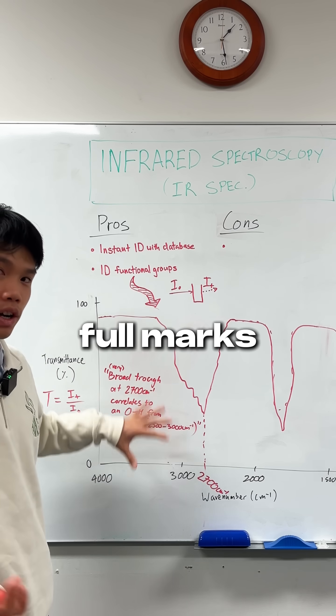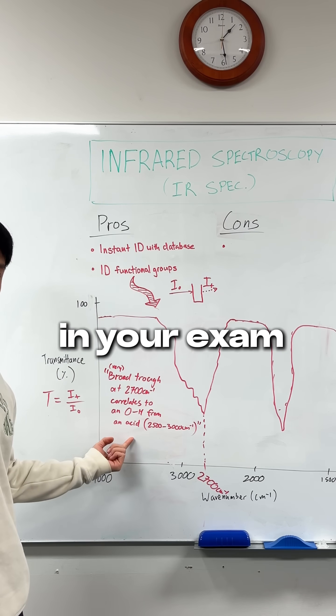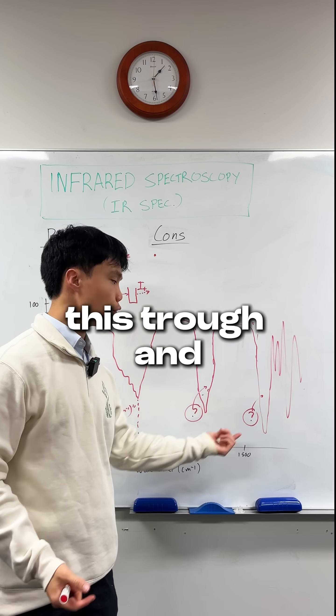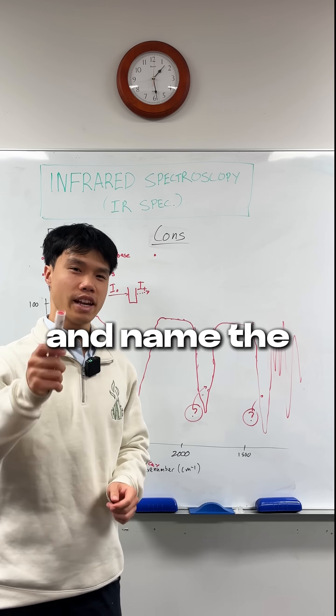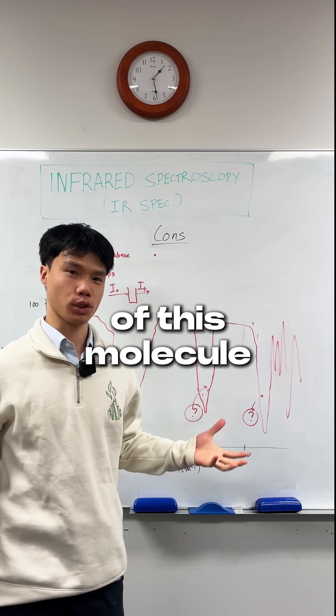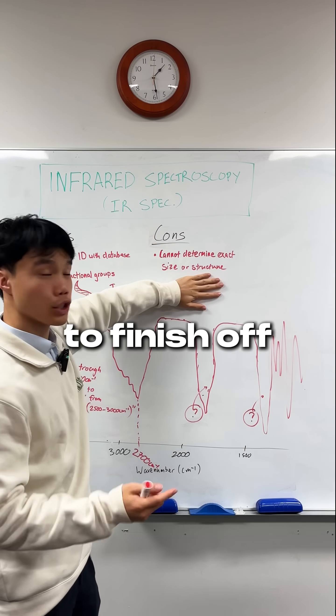To score full marks, you'll describe it like this in your exam. If that made sense, tell us what this trough and this trough are down in the comments below, and name the overall functional group of this molecule given this IR Spec.